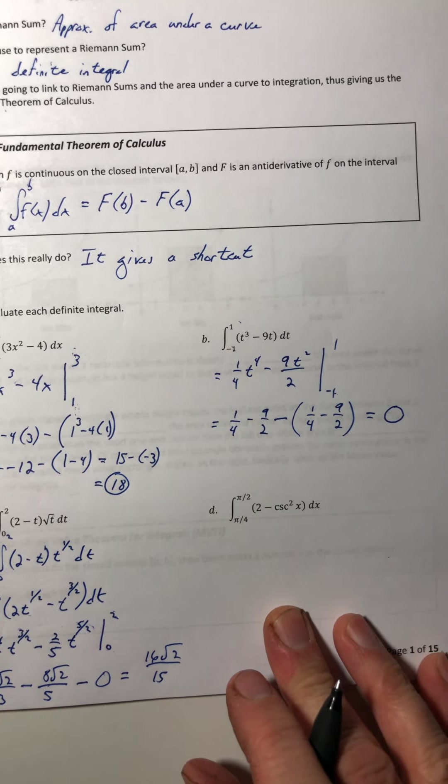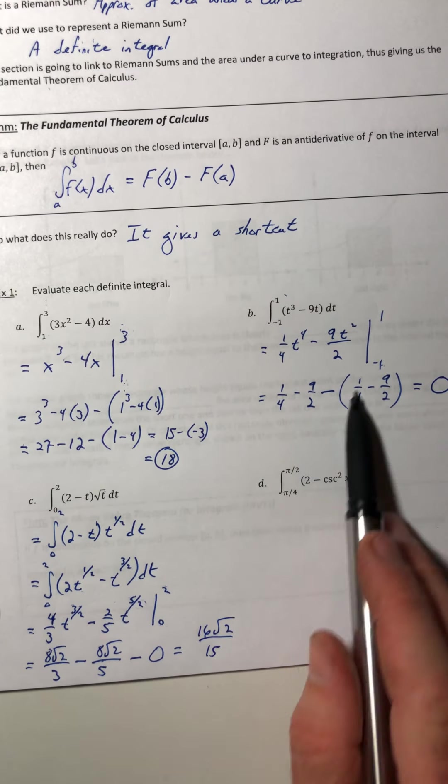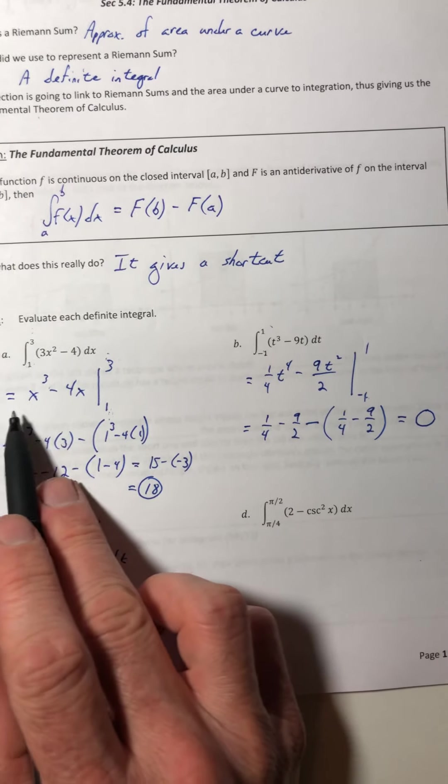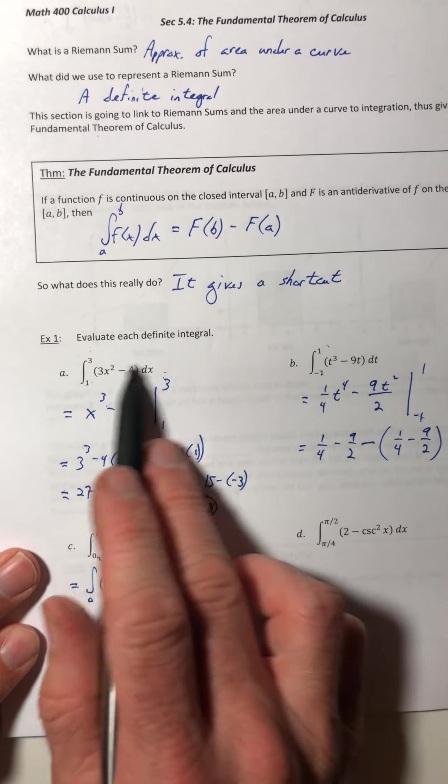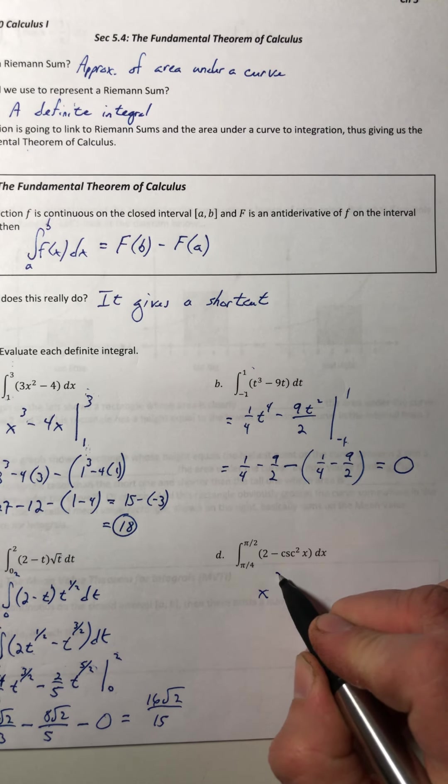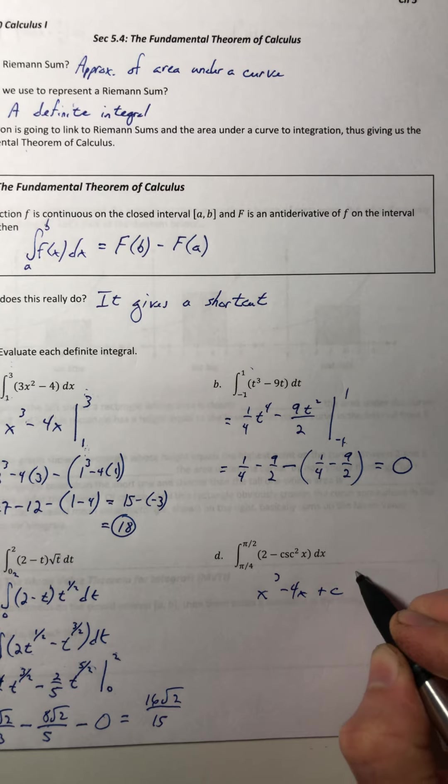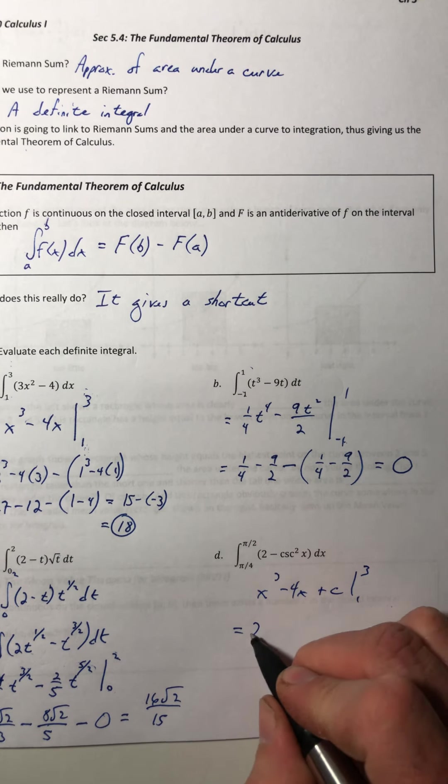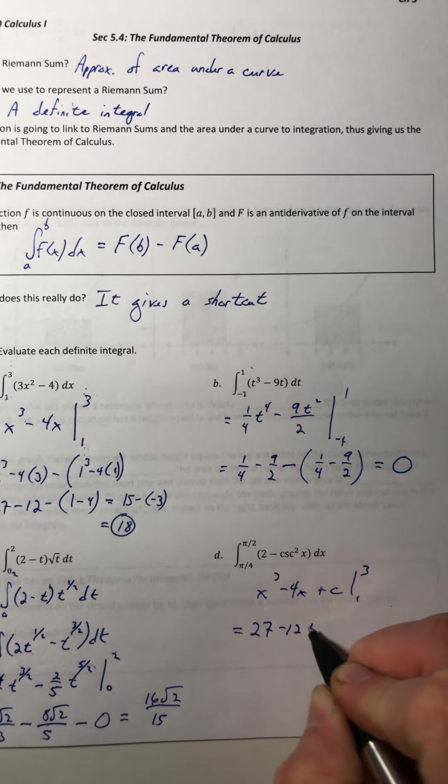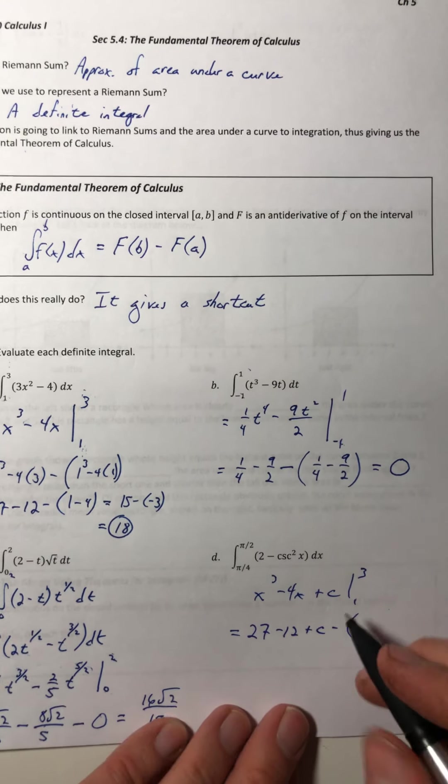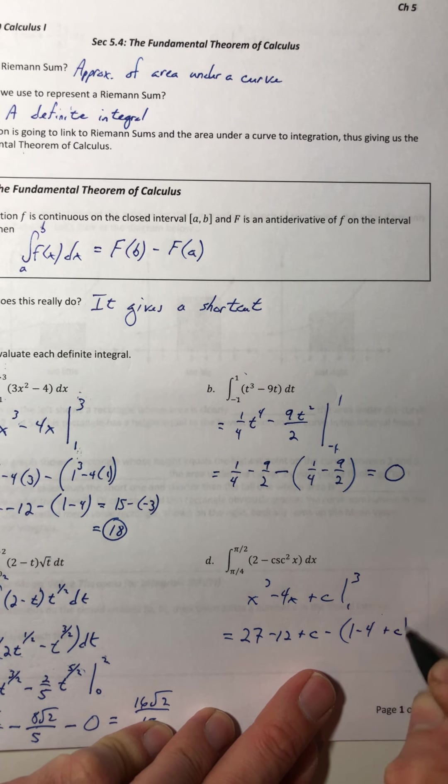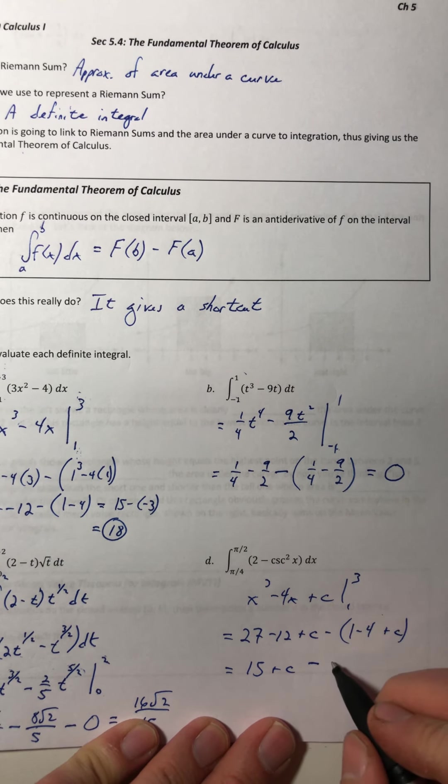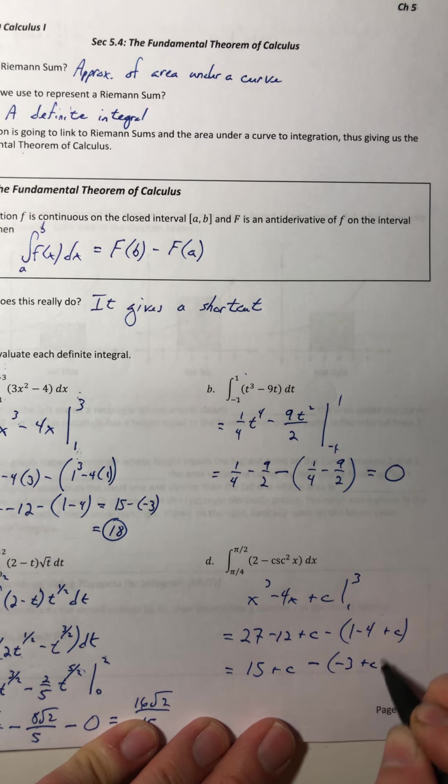Now some of you are going, hey wait a minute, there's something in these integrals that we did not account for. What about the plus c that happened? So let's look at what we did on this one for a second. So let's say you did x³ minus 4x and then you plug the c in. So plug in the 3. Minus now plug in the 1. So we have 15 plus c minus a negative 3 plus c. So if I distribute the negative,